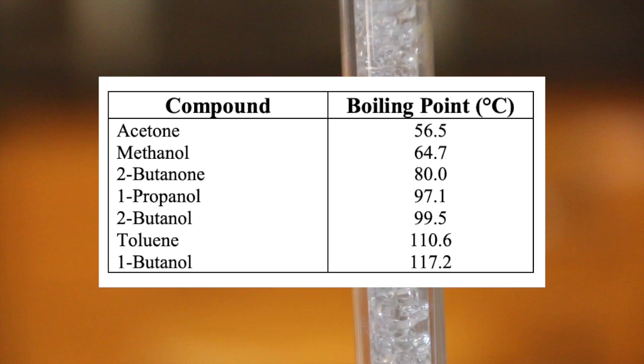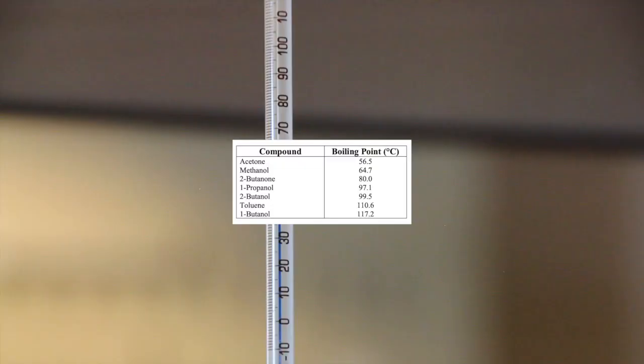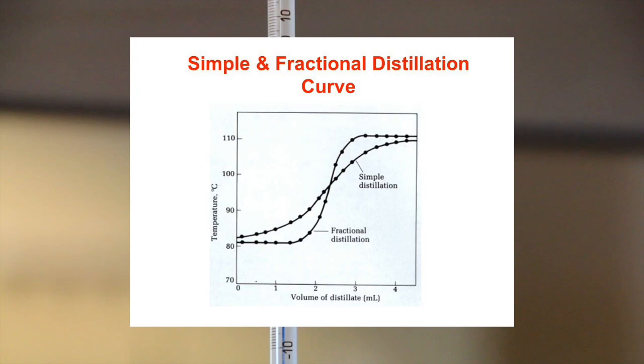A list of possible unknown compounds will be given to you in the lab. Your group can make a preliminary identification of your unknowns based upon the temperature of the plateaus in your distillation curves. You will make a preliminary identification of your unknowns based on both the temperature of the plateau on your curve and those of your group members.